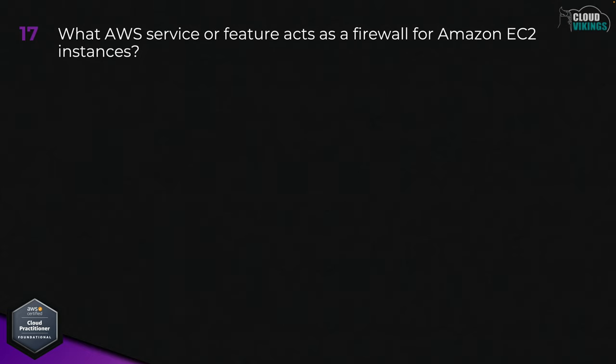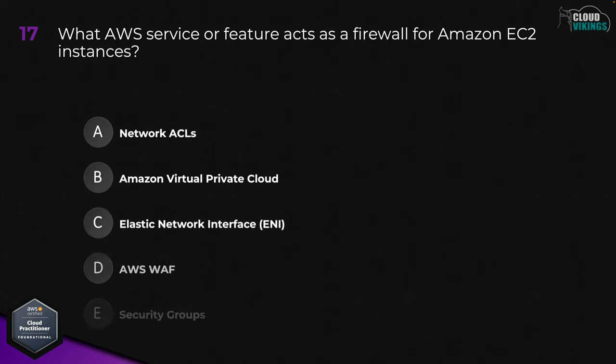Question seventeen: what AWS service or feature acts as a firewall for Amazon EC2 instances? Options are: A, network ACLs; B, Amazon Virtual Private Cloud; C, elastic network interface; D, AWS WAF; or E, security groups. The correct answer is E, security groups.